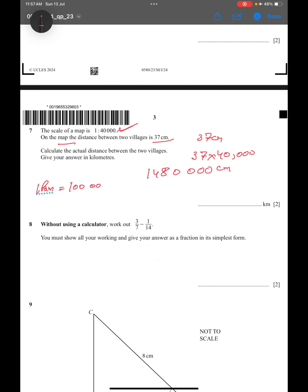If you divide this number by 100,000, you will get the answer in kilometers. Cancel three zeros, three zeros, one zero, one zero, and 148 divided by 10 will be 14.8. So the actual distance is 14.8 kilometers.